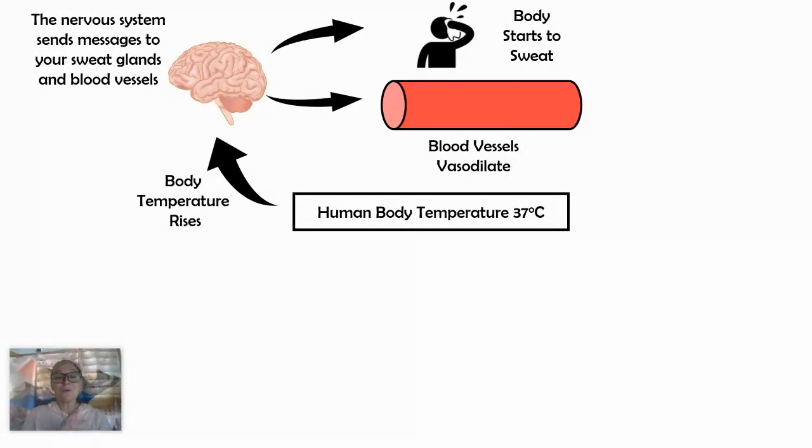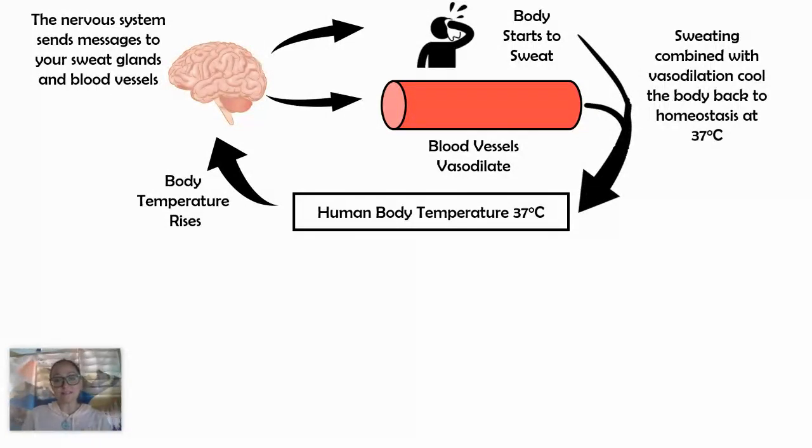And so both of those reactions in your body are going to work to try and bring you back to homeostasis. So sweating combined with vasodilation cool the body back down to 37 degrees Celsius.